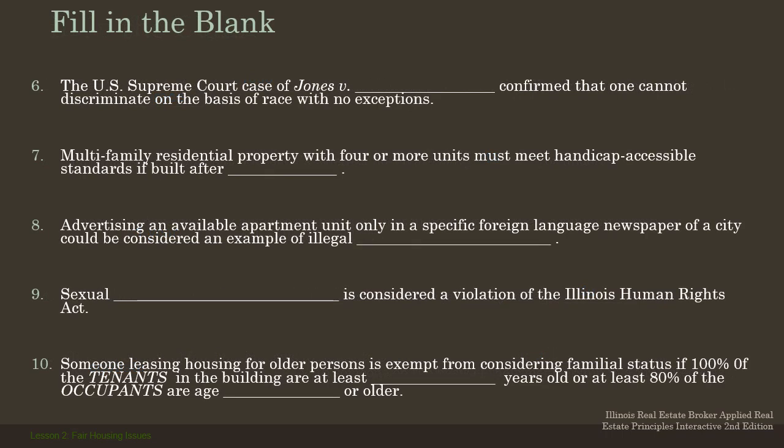The U.S. Supreme Court in Jones v. Mayer confirmed that one cannot discriminate on the basis of race with no exceptions. This has to do with the Civil Rights Act of 1866 — the Supreme Court confirmed that act. You want to know that the Civil Rights Act of 1866, which protects race, has already been challenged at the Supreme Court and has been held as a valid law.